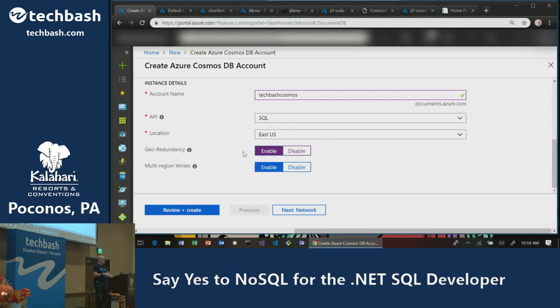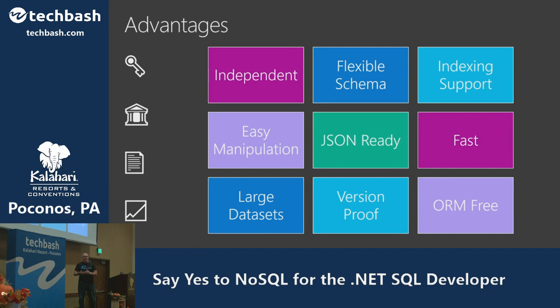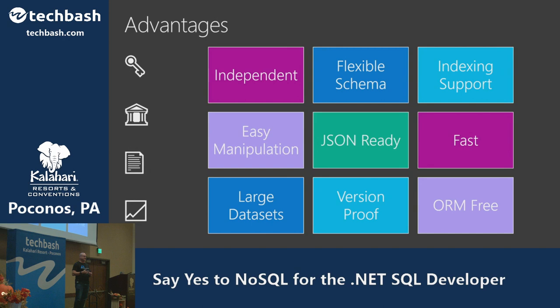You click Create, wait a couple of minutes, and you're up and running. Every item in a NoSQL database can be independent of other items — you don't have to adhere to a specific schema. That doesn't mean there's no indexing support though. By default, many engines automatically index all your properties, and you can configure how and when that happens to optimize your database.